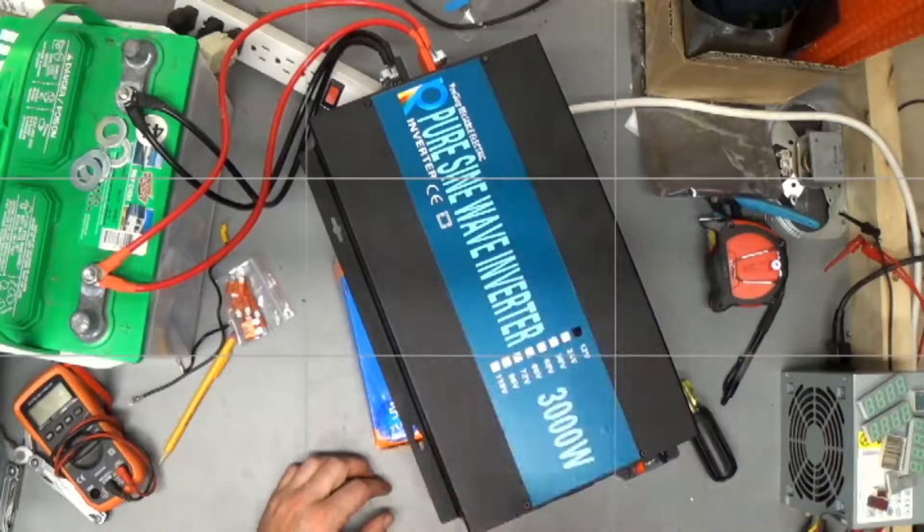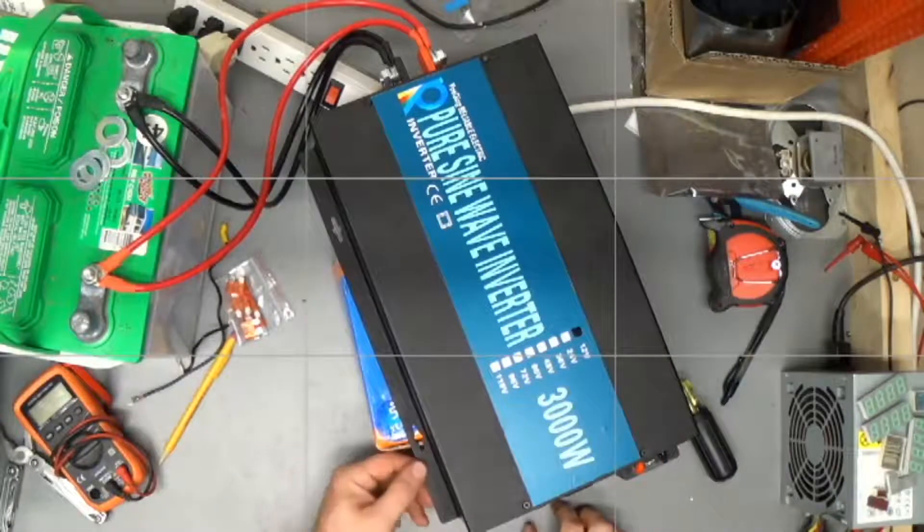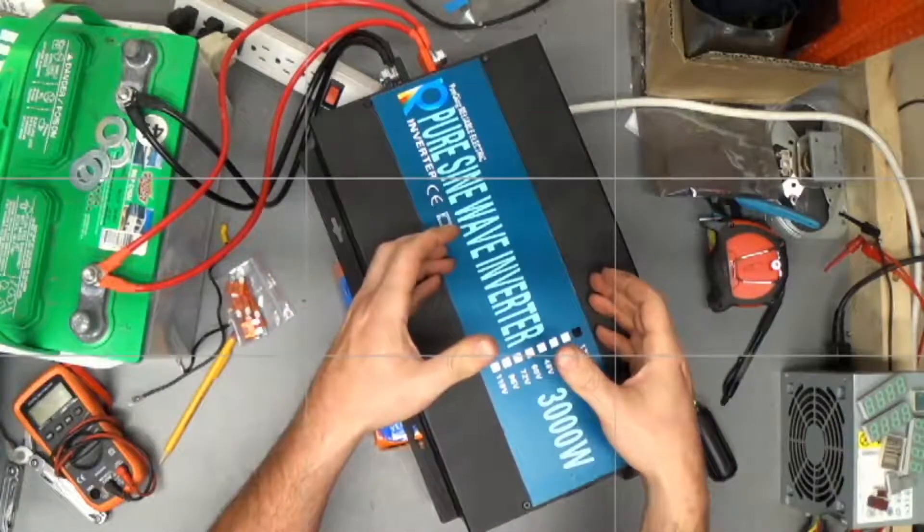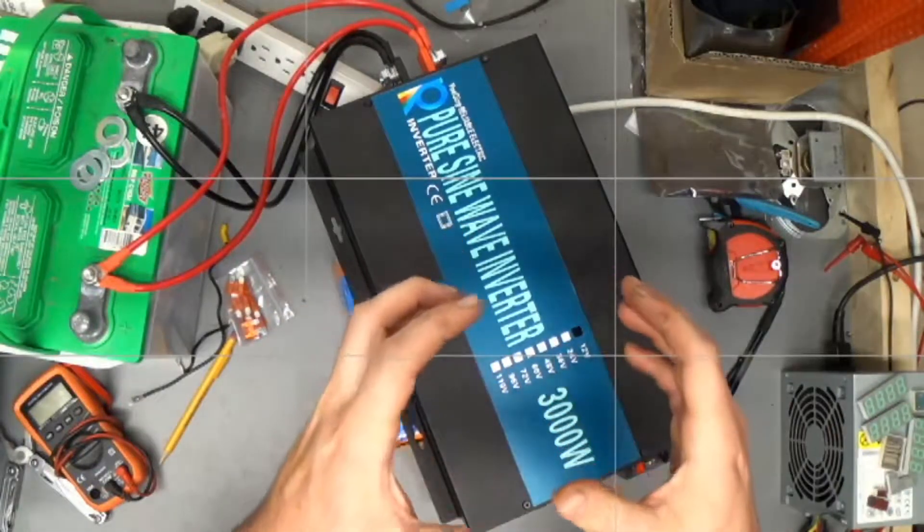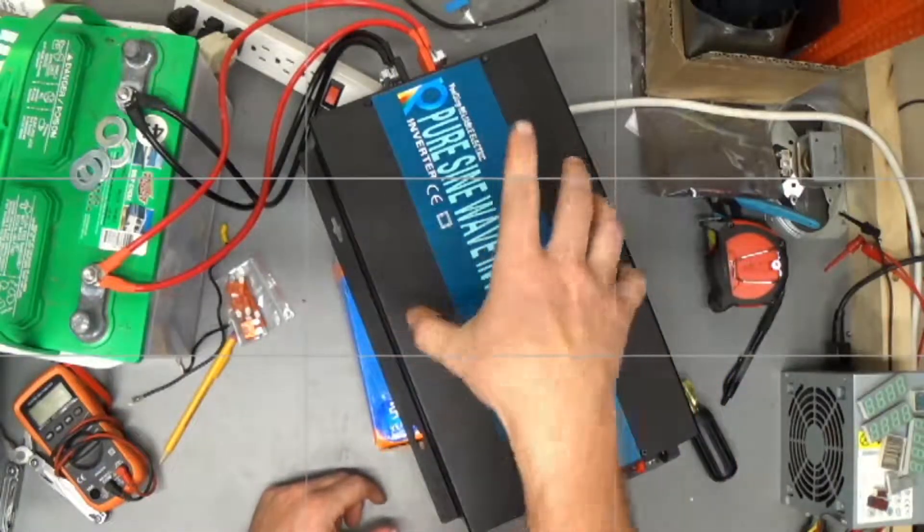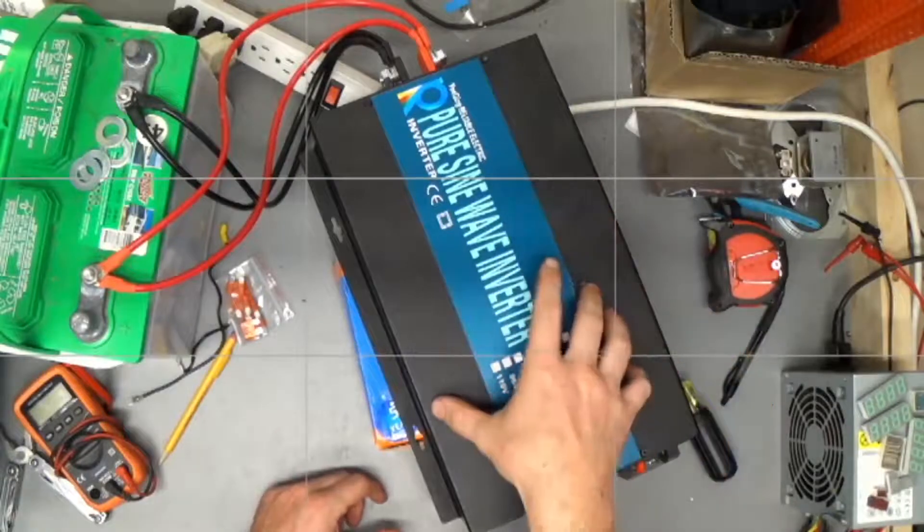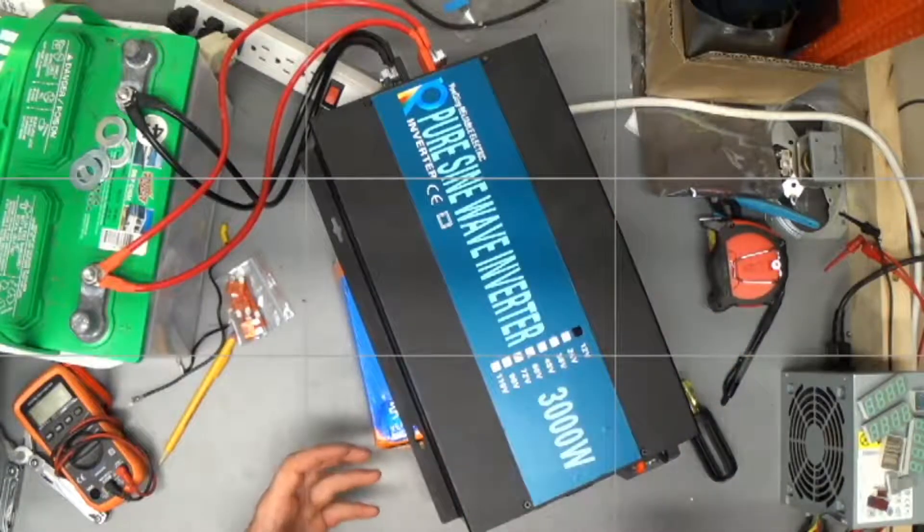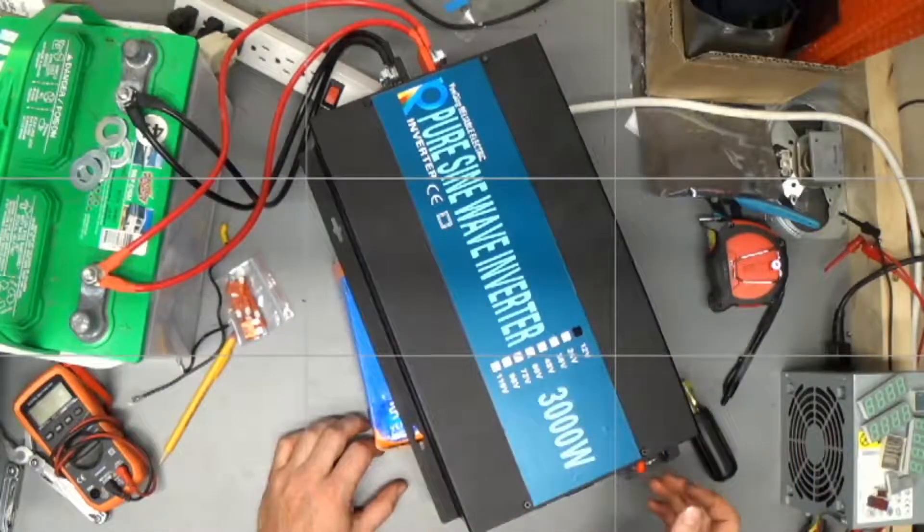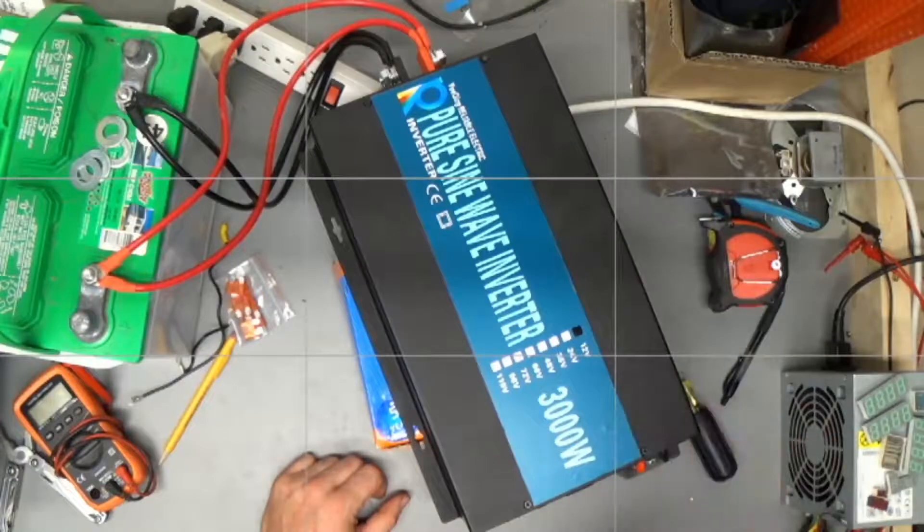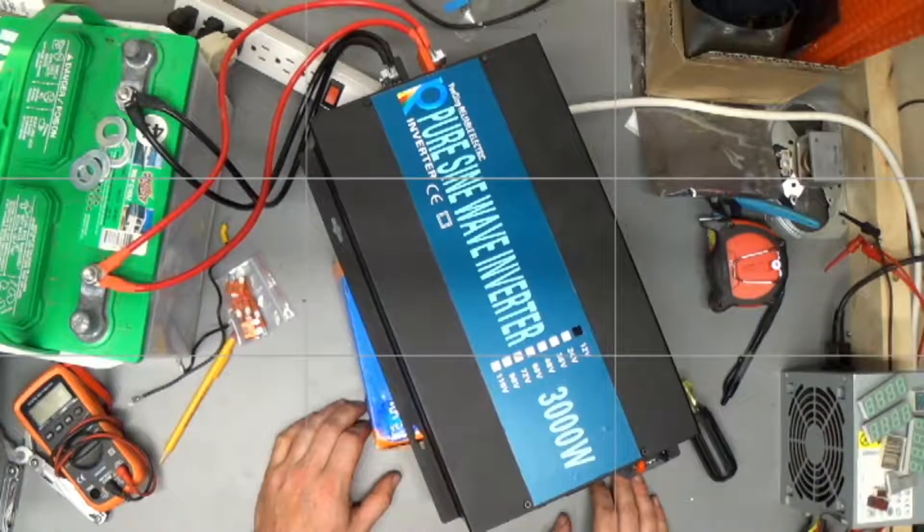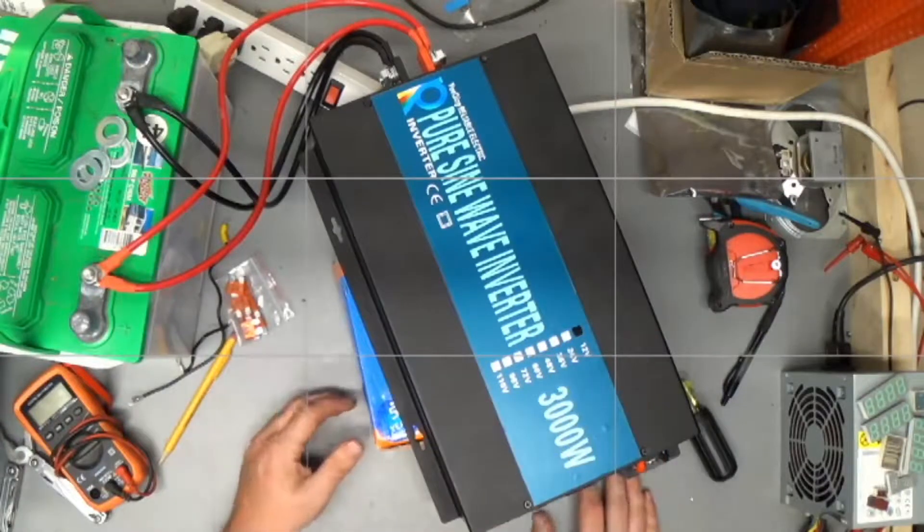So I think that the only safe way to hook this to your household electrical system is to put it inside of another box that it's electrically isolated from, to make sure that nothing can ever touch this case. Some wooden cabinet with only this in it that was always shut would probably be sufficient. And then you could just run these out to another terminal block or something like that. But yeah, it's not ideal.